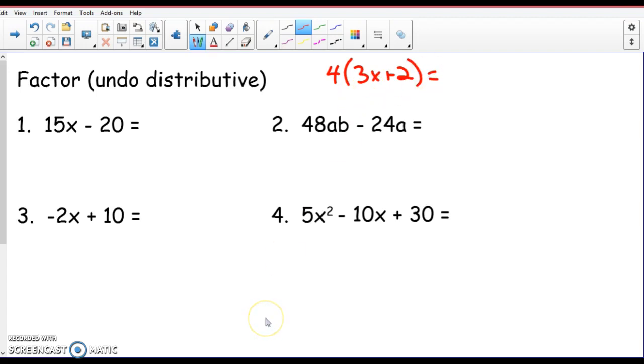That problem right up there in red, you think that's a Distributive Property? What do I get when I distribute this? Diego, what do I get here? 4 times 3x. That's 4 times 3x, and 4 times 2. Correct. So Diego just pointed out that when you're doing the Distributive Property, aren't you multiplying? This is 4 times the quantity 3x plus 2.